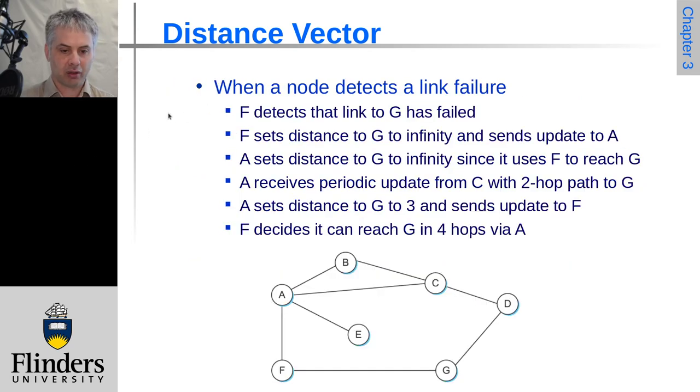Let's try and understand this problem with the bad news travelling slowly. So let's say that F detects that the link to G has failed. F sets a distance to G to infinity and it sends that to A. A will set the distance to G to infinity because it uses F to get to G. A at some point later will receive an update from C, saying it has a two-hop path, a cost of two to get to G.